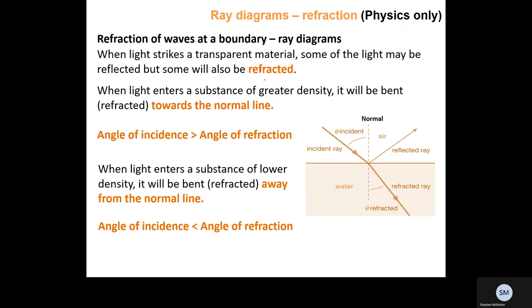First we need to know about refraction. Refraction is the bending of light. A boundary is the part of an environment where one type of medium changes into another — for example, air to glass. Transparent means you can see through. Reflected is when something bounces off — a sound wave reflected from a wall is called an echo, and reflection in a mirror is when a light wave bounces off back into our eyes.